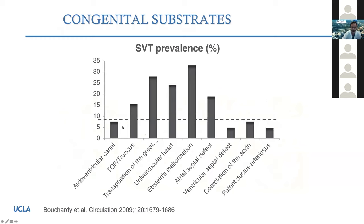This publication from Canada shows the prevalence of SVT across a large population of congenital heart disease defects. The ones with the highest prevalence are: transposition of the great arteries after the Mustard or Senning operation — very common to have SVT; univentricular hearts, essentially Fontan patients, also with a very high incidence; and Ebstein's anomaly, probably the highest incidence of SVT in congenital heart disease. I'll also speak about Ebstein's if time permits.